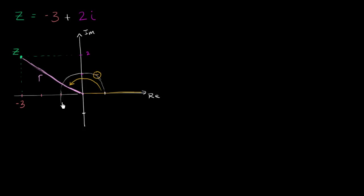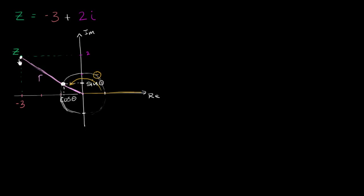So this right here is a unit circle, a circle of radius one. By definition, what are the horizontal and vertical coordinates of this point where this line intersects the unit circle? This is forming an angle of theta with the positive real axis. So the horizontal coordinate, by definition, is going to be cosine of theta — that's the unit circle definition of cosine of theta — and the vertical coordinate is going to be sine of theta. So what would the horizontal and vertical coordinates of this point z be in terms of cosine theta and sine of theta?